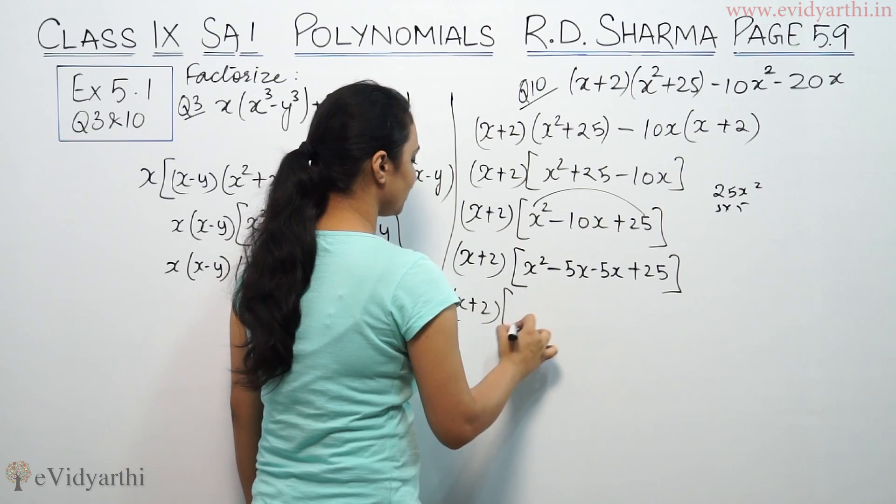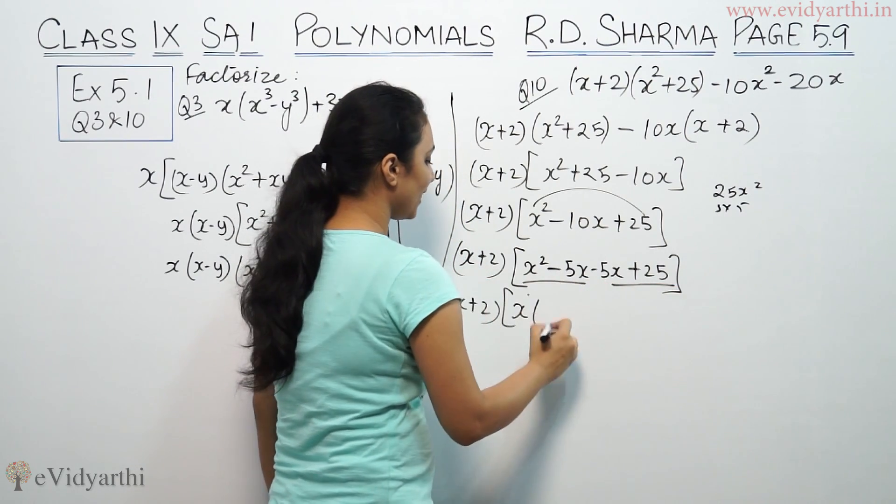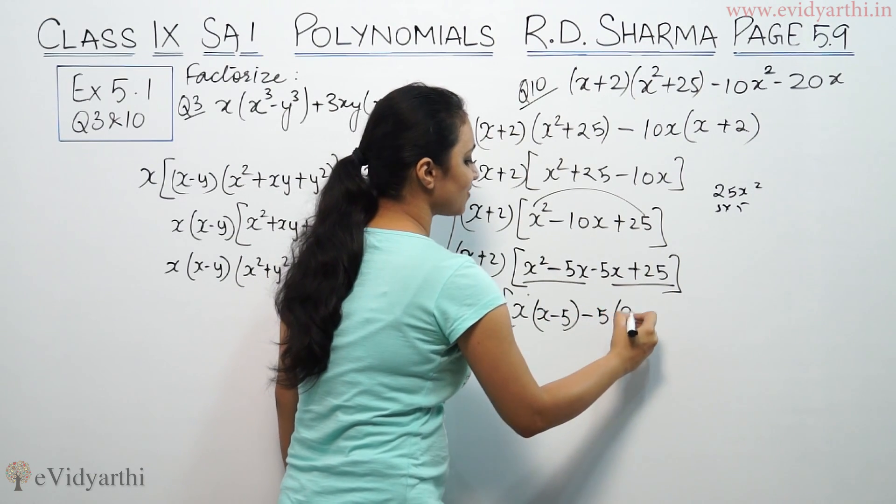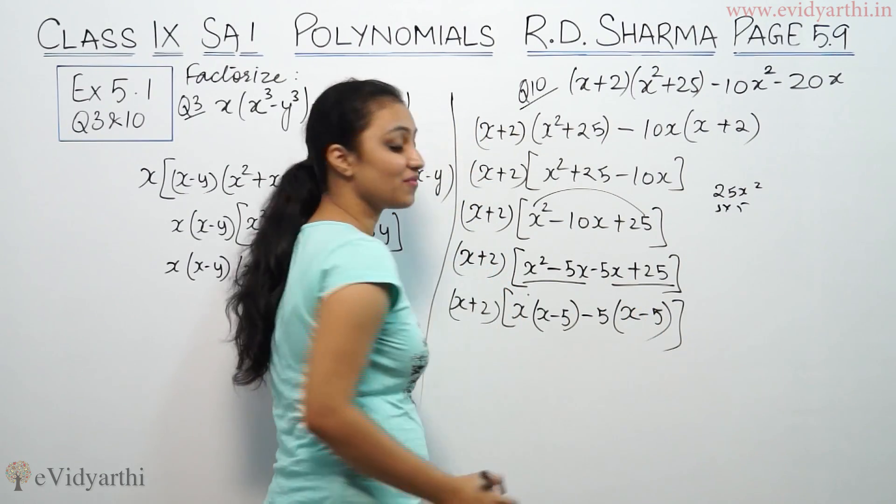So (x + 2). Take common from this and common from this. Here common is x, and both have (x - 5). Here common is -5, and both have (x - 5).